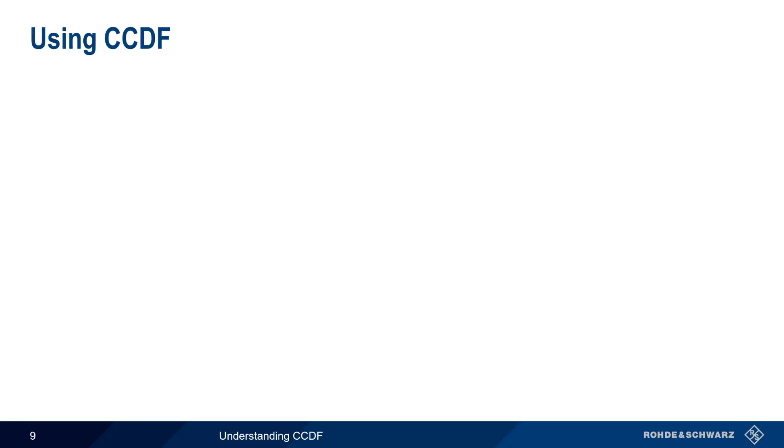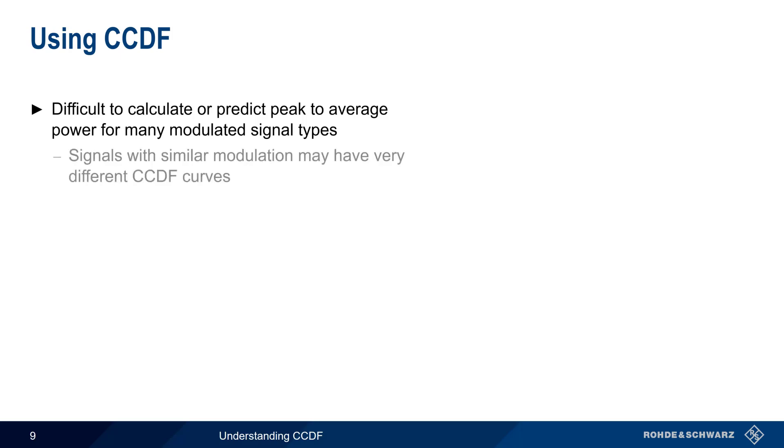CCDF can also be helpful in a number of other ways. First, it's difficult to mathematically calculate the peak to average power ratio of many modulated signals based solely on that signal's parameters. Even signals with similar modulation may have very different CCDF curves. For example, an LTE signal using 64-QAM modulation will have a different CCDF curve than an LTE signal using only QPSK.